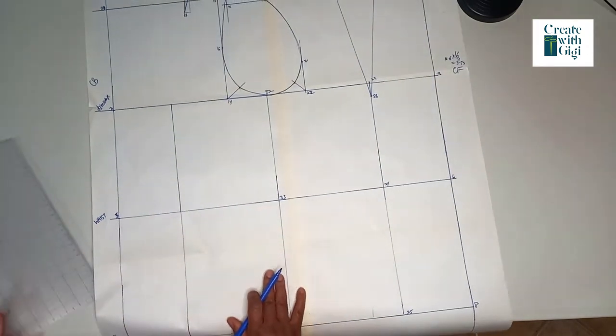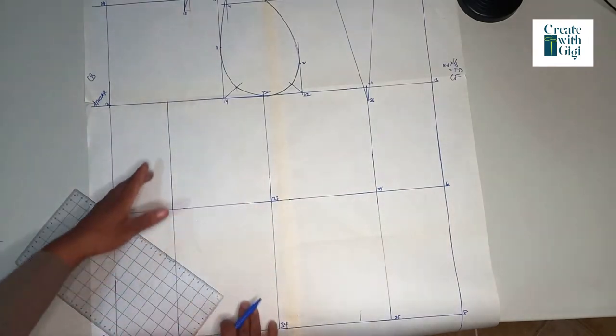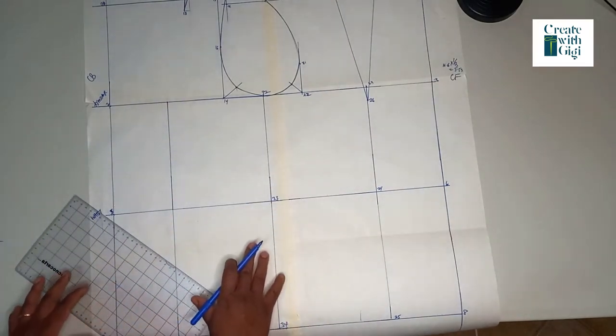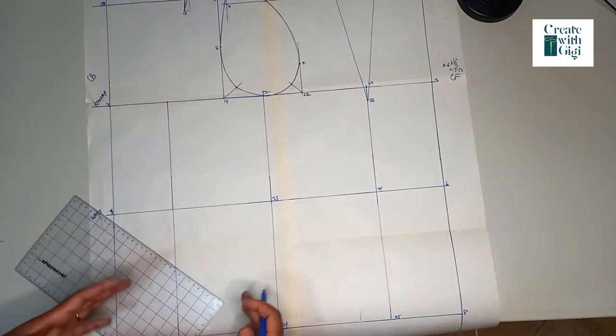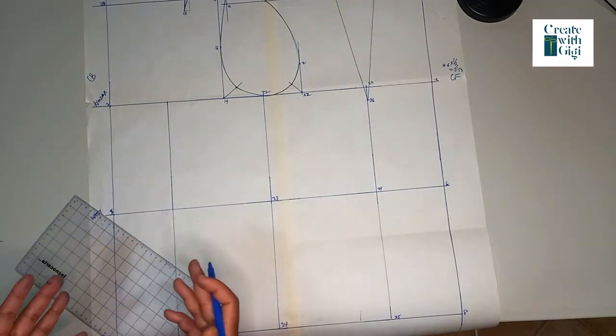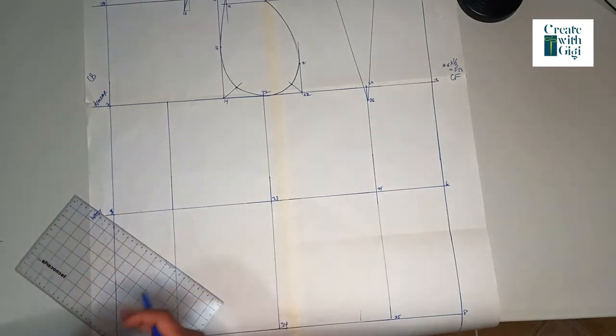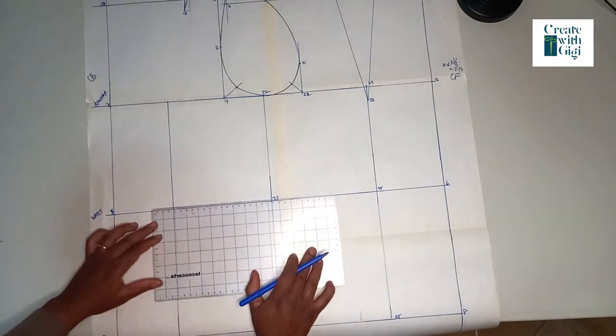In total, we're going to take away 12 centimeters from this block. This is done so we have a well-fitted, pleasing outfit by the time we want to sew or modify our block.